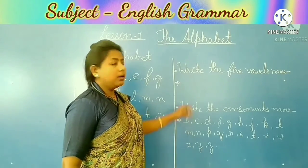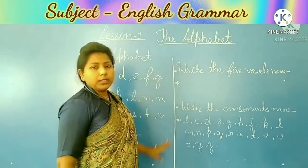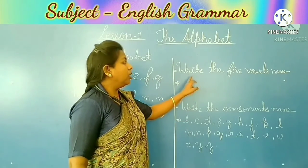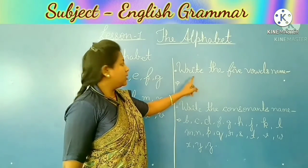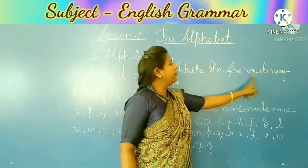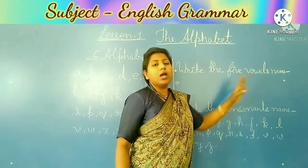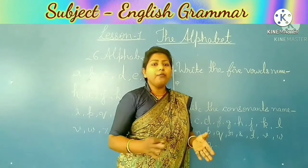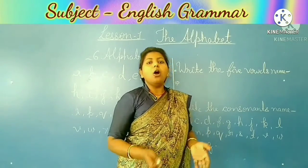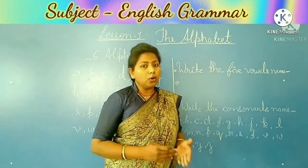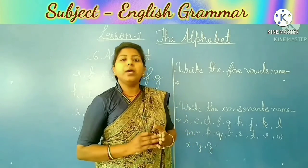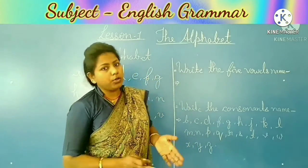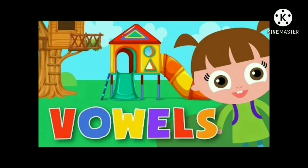Your first part is the alphabet and the second part is question-answer. Your question is: write the five vowels' names. Ab aapko vowels nahi pata? Maine aapko is start mein bataya na — five vowels hain aur 21 consonant hain — lekin maine yeh nahi bataya ki kya vowels hain aur kya consonant hain.